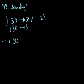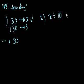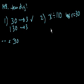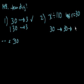Statement 2: x divided by 110 has remainder equal to 30. Well, this is a little different case. Definitely when 30 is divided by 110, the remainder is 30, because it goes into it 0 times. So the remainder is 30, and the tens digit is 3.